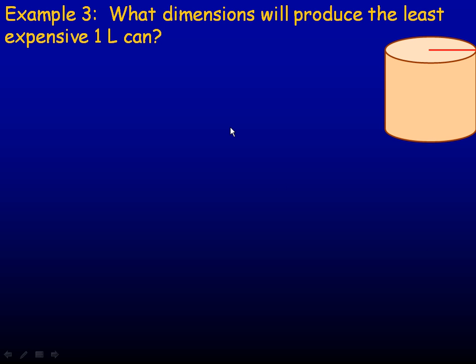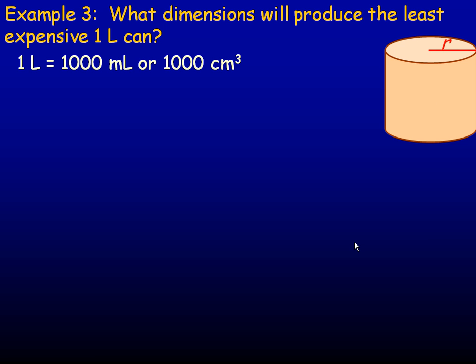Last example, number three: what dimensions will produce the least expensive one-liter can? We're talking about a cylinder here. The first thing I'm going to do is label the radius. One liter is the same as a thousand milliliters or a thousand cubic centimeters, so we're going to work in cubic centimeters. The volume formula for a cylinder is V = πr²h.